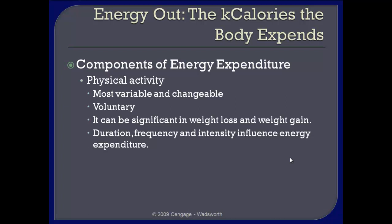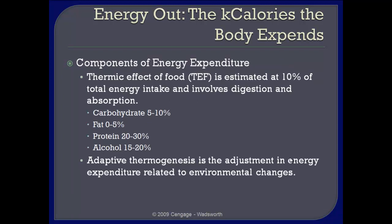Physical activity is where you're going to get your largest variable in the amount of energy expended, because you can voluntarily choose to do physical activity. The higher your heart rate or the intensity of an activity, the more energy you will be burning. The thermic effect of food — it's estimated that about 10% of total energy intake is involved with digestion and absorption. Adaptive thermogenesis is the adjustment in energy expenditure related to environmental changes; for example, if it is very cold outside and you need to shiver to keep warm, that is referred to as adaptive thermogenesis.